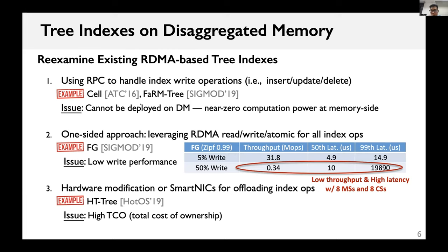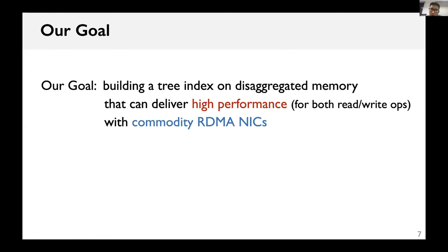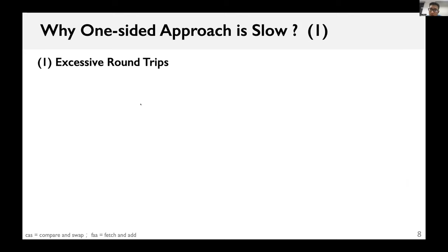The third approach is offloading index operations into memory server NICs by leveraging smart NICs or other new hardware. This approach cannot be deployed at large scale immediately. Our goal in this work is designing a tree index on disaggregated memory that can deliver high performance with commodity RDMA NICs. To this end, we further analyzed what makes the one-sided approach inefficient and found three major causes.